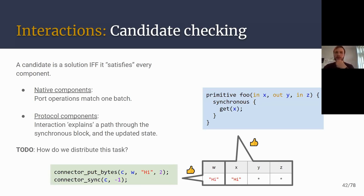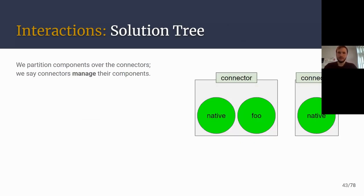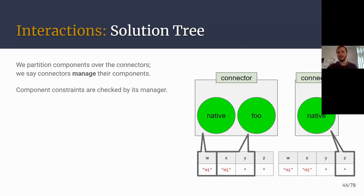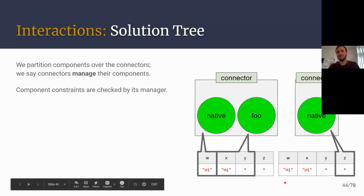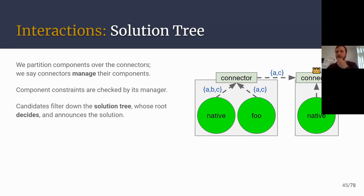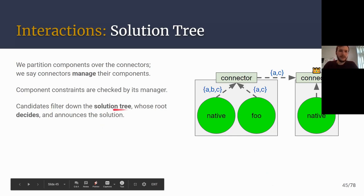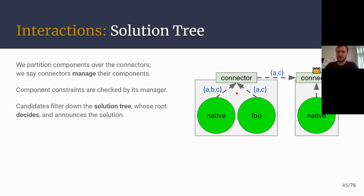But how do we distribute this task over the network with multiple connectors? We introduce the notion of locality and management — we partition the set of components over the set of connectors, and say that the connector manages a set of components. We'll have the checking of solutions performed in parallel by these connectors. Then we need to aggregate information distributed over the network, so we introduce the solution tree — an overlay network where all connectors and components of the session are organized into a hierarchy.